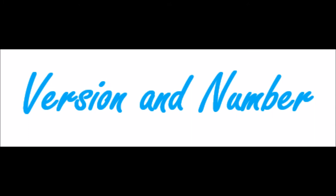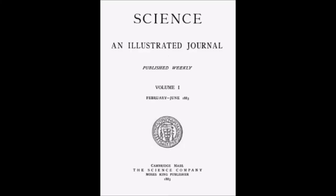The listing for version and number is for sources that have multiple volumes. This includes magazines as well as literary and science journals. Here you'll simply put the numbers listed for each.